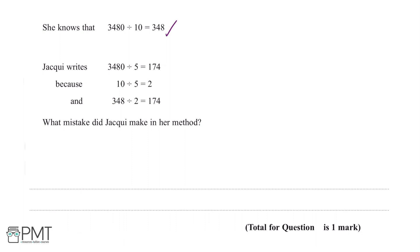So in order to get the mark for this question, we need to write the mistake that Jackie made in her method. So we need to write something along the lines of: Jackie should have multiplied 348 by 2 rather than divided.